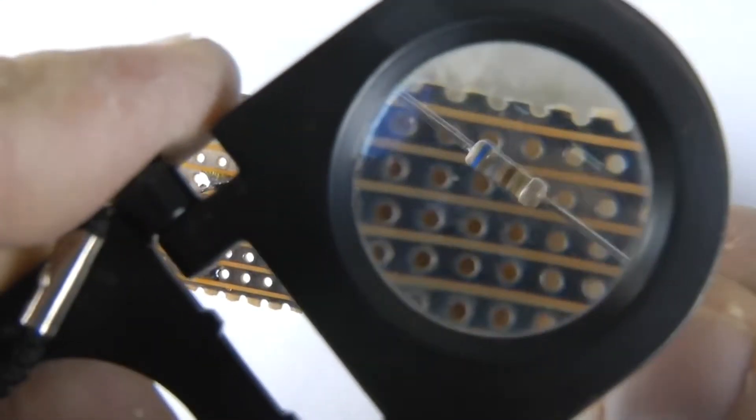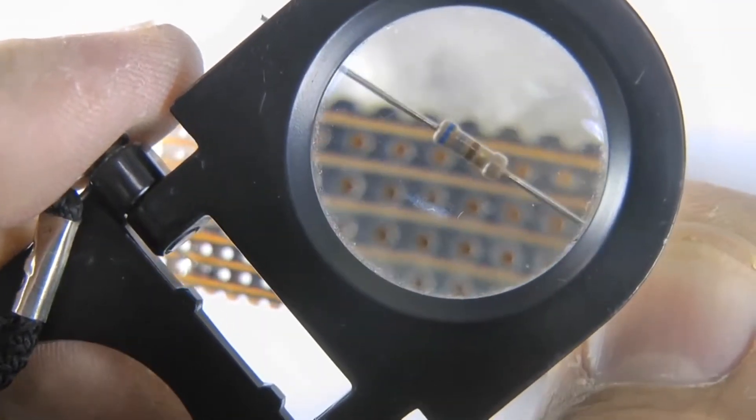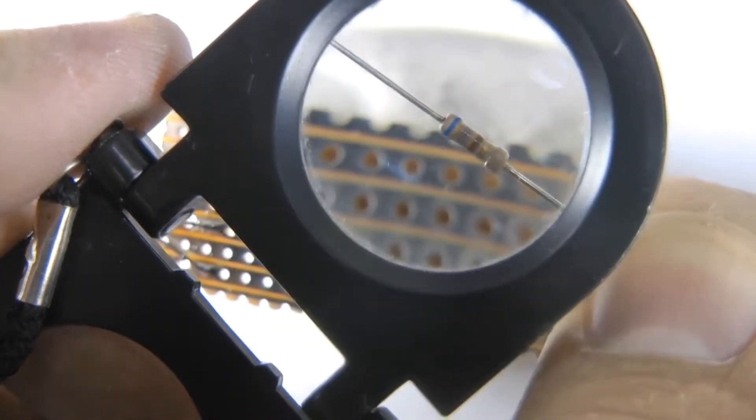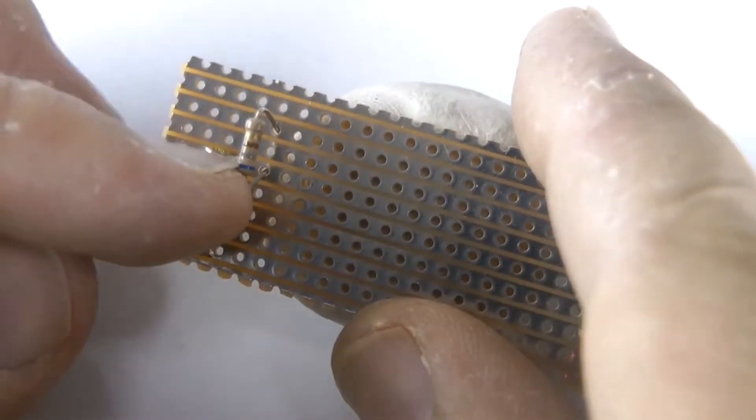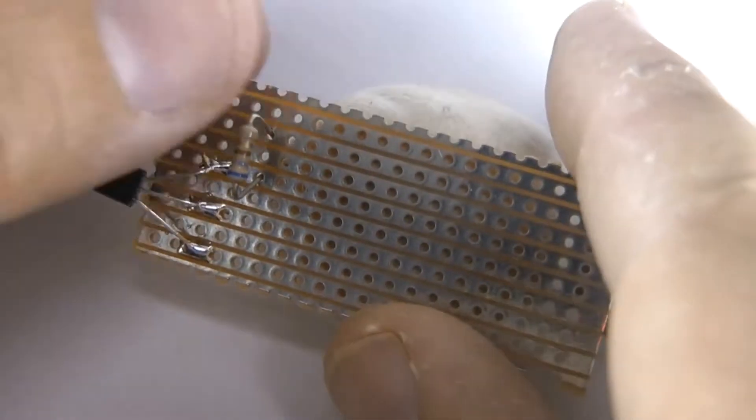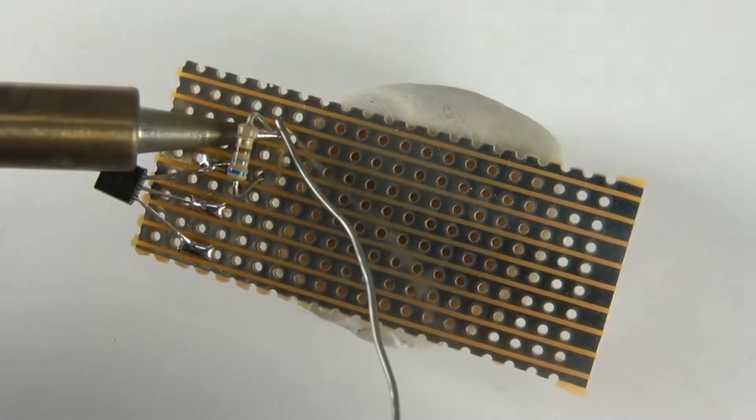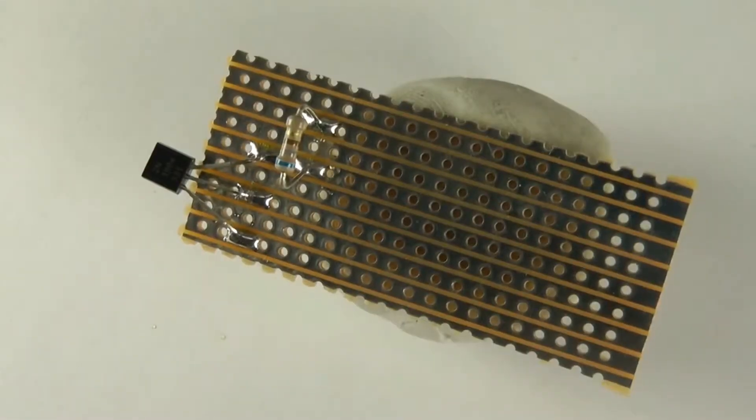This is a 680 ohm quarter-watt resistor, which is a nice resistor. It's blue, grey, brown and gold, if you can't see the values there. And you'll notice I'm not putting the parts down flat on the board as you would normally do, because I want to be able to get in there with a soldering iron. Nice clean solder work.